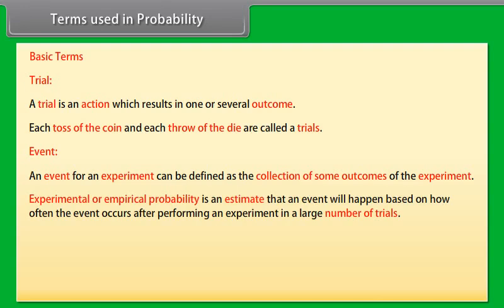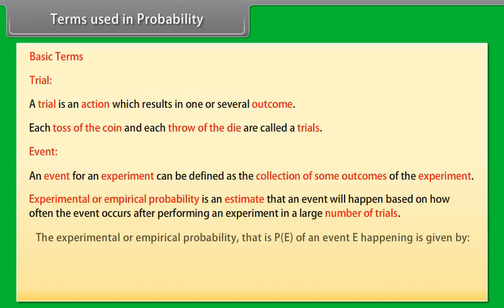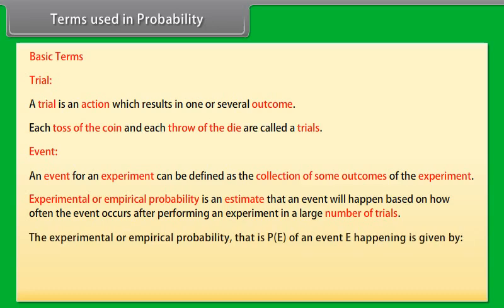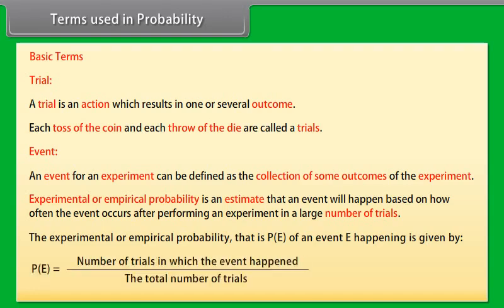Experimental or empirical probability is an estimate that an event will happen based on how often the event occurs after performing an experiment in a large number of trials. The experimental or empirical probability, that is P(E) of an event E happening is given by P(E) is equal to number of trials in which the event happened upon the total number of trials.